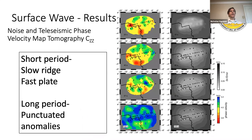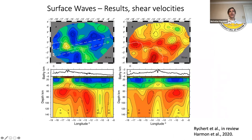These are the phase velocity maps, which are difficult to interpret just by looking at them. In general, at short periods we see low velocity zones near the mid-ocean ridge, which is expected, and then higher velocities further off axis. When we get to 100 seconds it becomes a little more modeled. There are a few notable anomalies — this region here always appears to be fast, and we'll talk about that when we look at the shear velocity model.